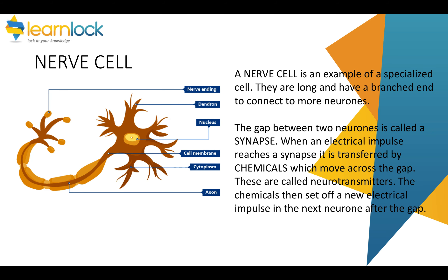Going back to topic one, we looked at nerve cells. Nerve cells or neurons have different shapes depending on whether they're sensory or motor, but in general a nerve cell is long and branched to keep connecting to more neurons. The gap between one nerve cell and another is called a synapse. That's where the electrical impulse stops and is transferred chemically as neurotransmitters. Once it gets to the other side of the gap, it turns back into a new electrical impulse and carries on.